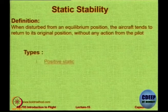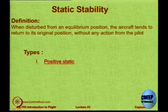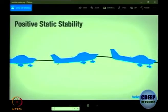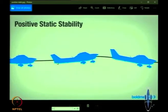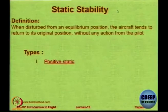There are three basic types. One can have positive static stability, illustrated by an aircraft on the left that is disturbed and pitches up slightly — the initial tendency is to come down. That is positive static stability.